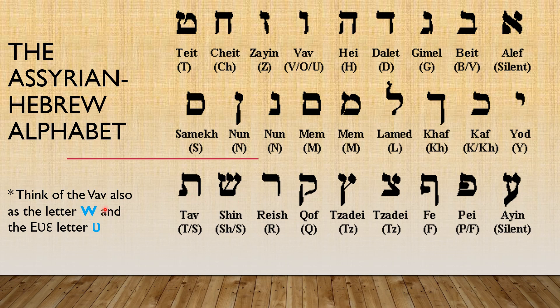Think of the Vav — this is the Vav right here. Think of the Vav also as the letter W because it also doubles as Vav. And the letter V, which is this character right here.